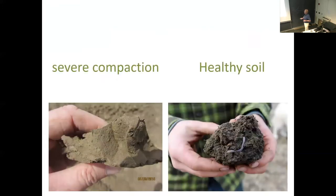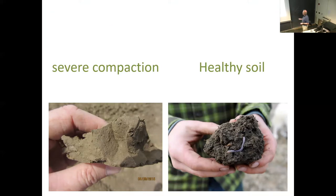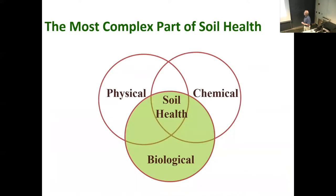In a very compacted soil you see maybe one root that went in — it may have found a zone of weakness — but most of the water and nutrients are not accessed. If you look at healthy soil you see earthworms, earthworm channels, and casts, and the roots will grow very well into that. So it's not only whether the soil can hold water, but whether it's also accessible to the plants. You want a combination of good water retention capacity and good aggregation so roots can access it.